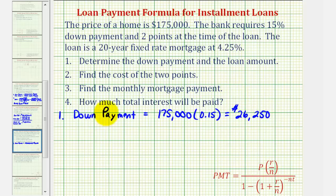So now to determine the loan amount, we'll take the $175,000 and subtract the down payment, which comes out to $148,750.